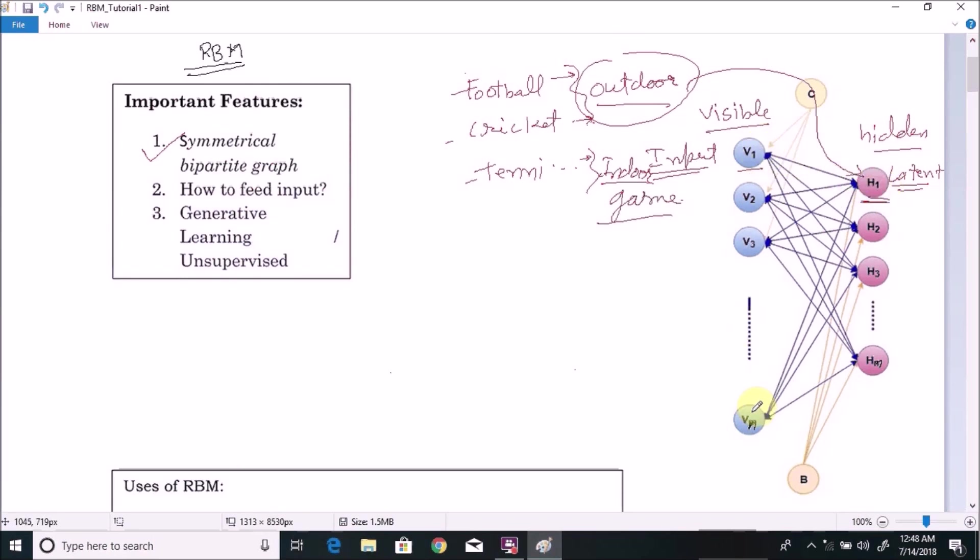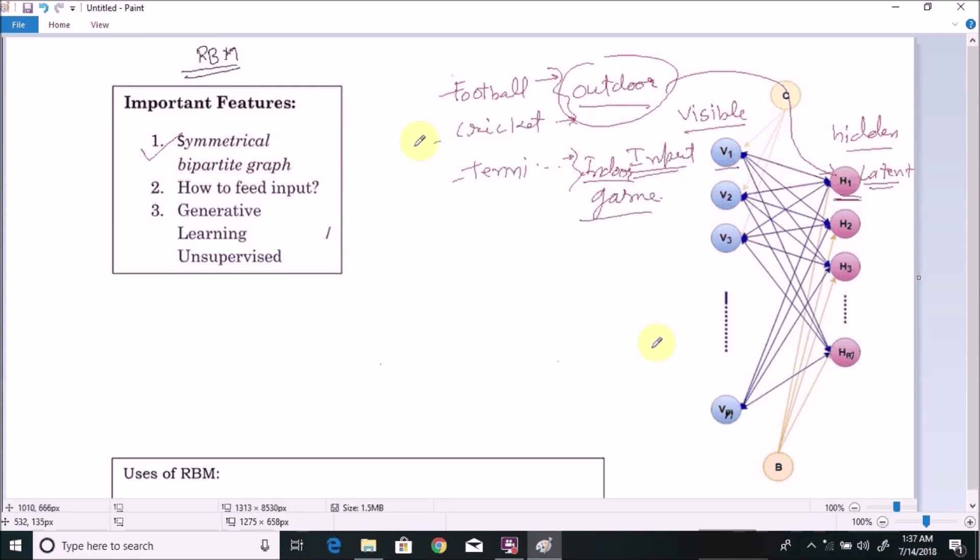Now, important thing is Restricted Boltzmann Machine is a symmetrical bipartite graph. You can see that in this sample Restricted Boltzmann Machine diagram, each node of visible layer is connected to all the nodes of the hidden layer. Now, the symmetrical part is like that.